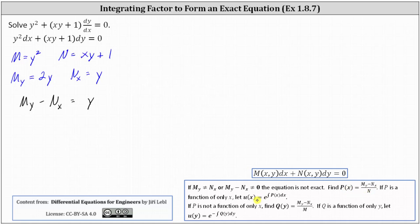The integrating factor is u of x equals e to the power of the integral of p of x dx. If we divide by M, we want the quotient to be a function of only y; we call that quotient q of y, and the integrating factor is u of y equals e to the power of the negative integral of q of y dy. Here we have the difference y, and we need to decide whether to divide by M or N. Notice we should divide by M, so we're going to divide this difference by M, meaning we divide by y squared.